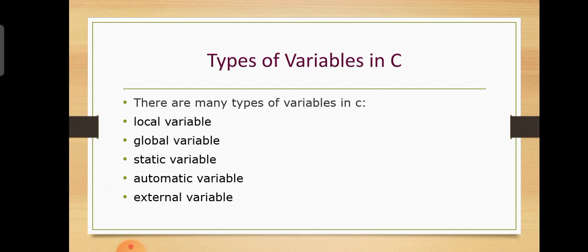These are the types of variables in C programming language. There are many types: Local variables, Global variables, Static variables, Automatic variables, and External variables.